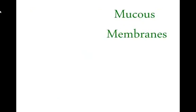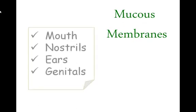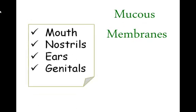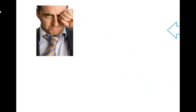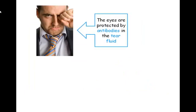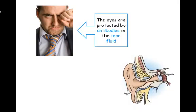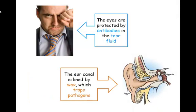The mucous membranes protect body openings like the mouth, nostrils, ears and genitals. Some membranes secrete mucus, which is a sticky substance that traps pathogens and contains antimicrobial enzymes. Are those the only primary defences? Those are the ones you need to know for your exam, but a few others include the antibodies in the tear fluid protecting your eyes and the wax lining of the ear canal that traps pathogens.